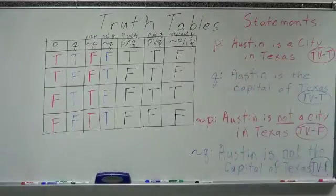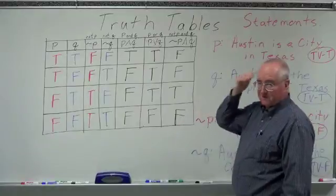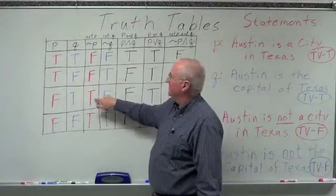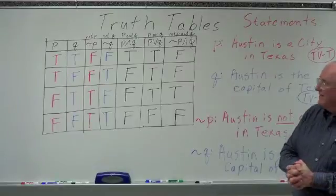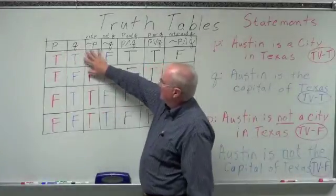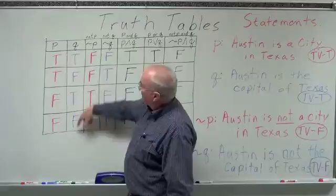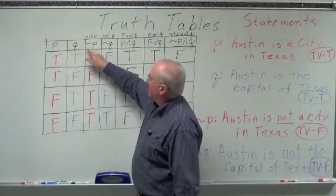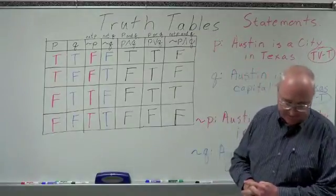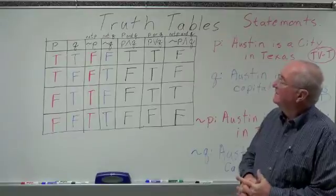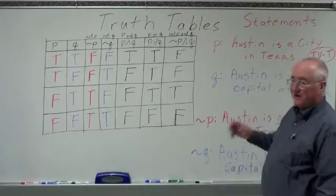Is not P true? No, it's false. So what do we know about this? This is always going to be false for us. The only time it could possibly be true is if not P is true, and it's not true. Seems a little confusing — study it, look at it. These are the basics: P and Q, not P, not Q, P and Q, P or Q, and combinations thereof. By using that, we can do a whole lot with truth tables and determine the truthfulness of some very complex statements.